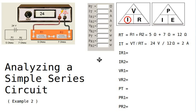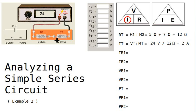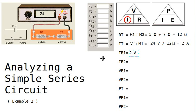Now, this is a series circuit, and in a series circuit the current is the same everywhere. We could try to calculate the current flowing through each individual resistor using Ohm's Law — the current of R1 would be the voltage across R1 divided by the resistance of R1 — but we don't know the voltage across R1 yet. It's not 24 volts; in a series circuit you have voltage drops. But since current is the same everywhere, we know the current for resistor 1 is 2 amps and the current for resistor 2 is also 2 amps.